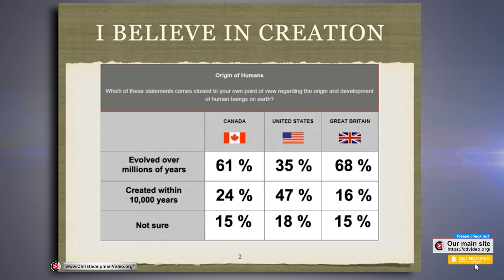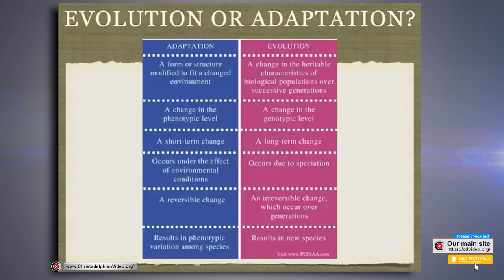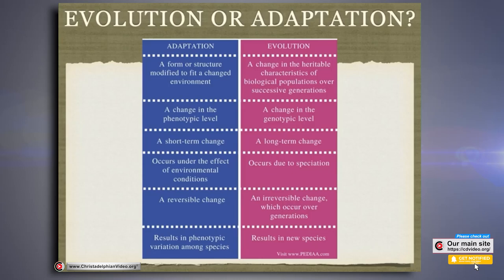Before we go into our particular subject tonight, I just want to think about the idea of evolution and adaptation. I'm by no means a biologist or have any real expertise, but there are main differences between adaptation and evolution. There's a word you might not be very aware of: phenotypic and genotypic. Phenotypic is the outward appearance of the genes of an animal or a plant, whereas genotypic refers to the genetics that make up the animal.